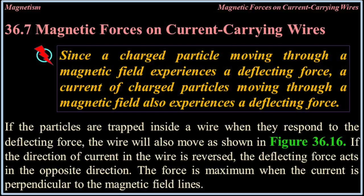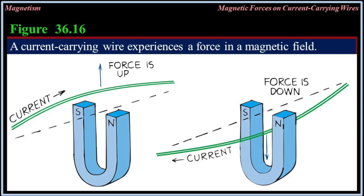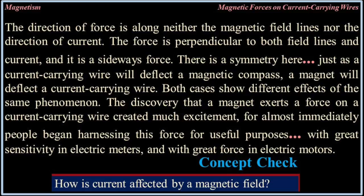Magnetic forces on current-carrying wires. Since a charged particle moving through a magnetic field experiences a deflecting force, a current of charged particles moving through a magnetic field also experiences a deflecting force. If the particles are trapped inside a wire when they respond to the deflecting force, the wire will also move. If the direction of the current in the wire is reversed, the deflecting force acts in the opposite direction. The force is maximum when the current is perpendicular to the magnetic field lines. The force is perpendicular to both field lines and current — it is a sideways force.